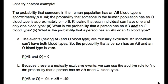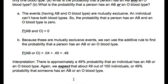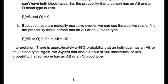For part (b), because these are mutually exclusive events, we use the addition rule to find the probability that a person has an AB or an O blood type. P(AB) + P(O) = 0.04 + 0.45 = 0.49. The interpretation is there is approximately a 49% probability that an individual has an AB or an O blood type. We expect about 49 out of 100 individuals, or a 49% probability, that someone has an AB or an O blood type.